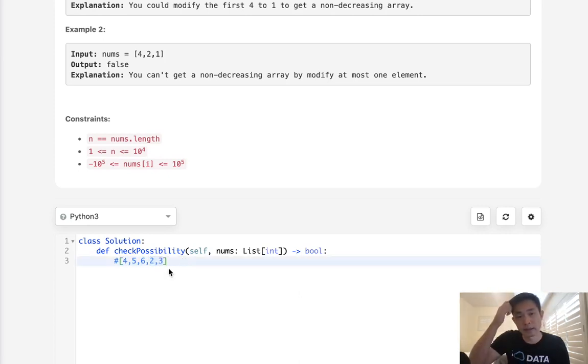So in that case, that would signify we only have one to change here. We can make this whatever, 6, and that should make it sorted, but it doesn't, right, because of this last one here.